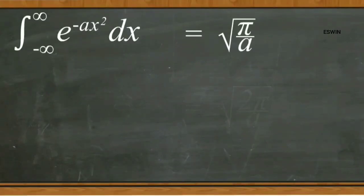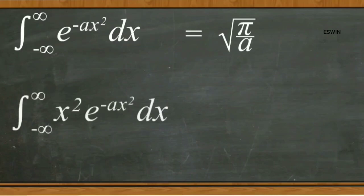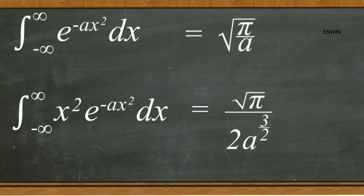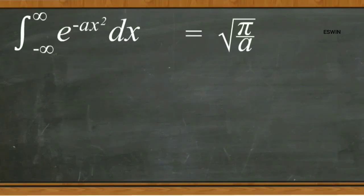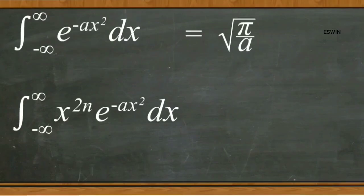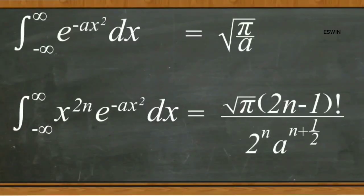Now, let us differentiate both LHS and RHS of this equation with respect to a. Then we get integral minus infinity to plus infinity x square e raised to minus ax square dx equal to under root pi divided by 2 into a power 3 by 2. By repeated differentiation, it is easy to show that integral minus infinity to plus infinity x power 2n into e raised to minus ax square dx equal to under root pi into 2n minus 1 factorial divided by 2 power n into a power n plus 1 by 2.